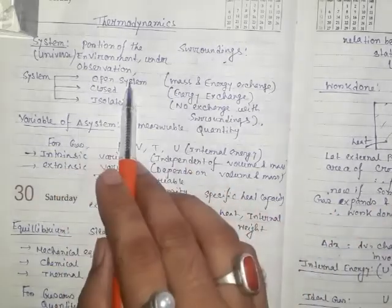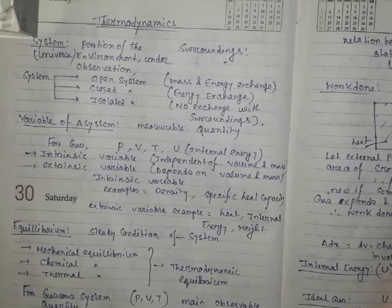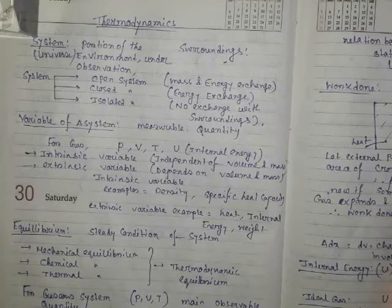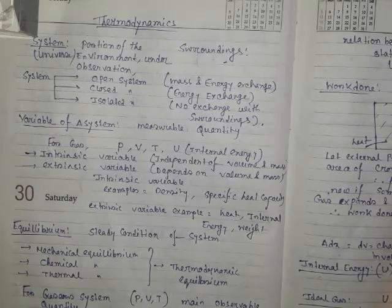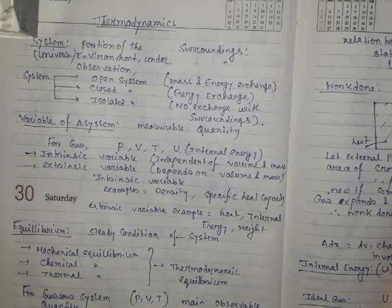An open system is a type of system that can exchange both mass and energy with the surroundings — like boiling water in an open container. The vapor produced is transported to the surroundings, and some amount of energy is also carried out by the vapor itself.